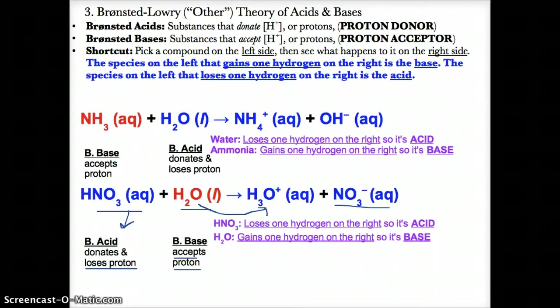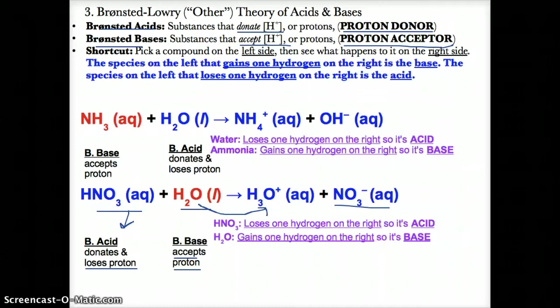In general, the species that donates or loses a hydrogen ion or proton is the Bronsted acid, and the substance that accepts or gains a hydrogen ion is the Bronsted base.